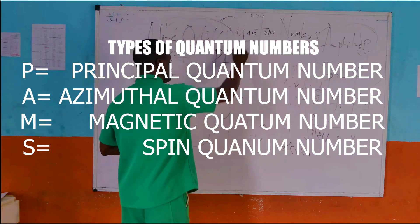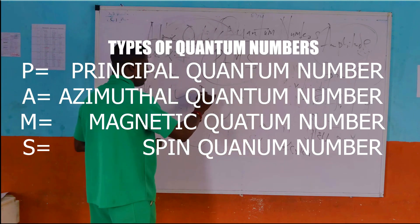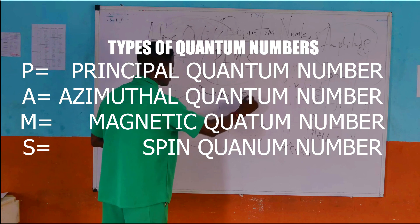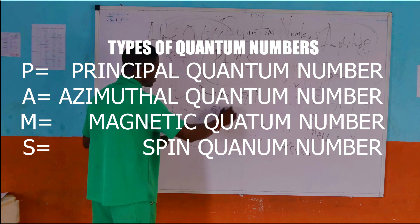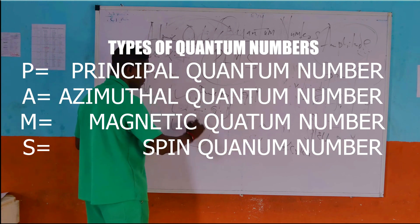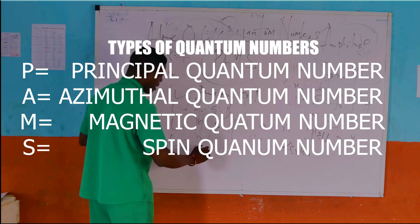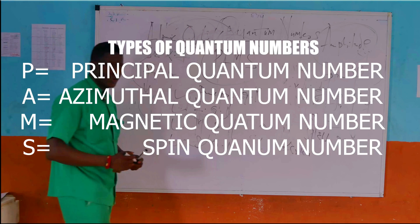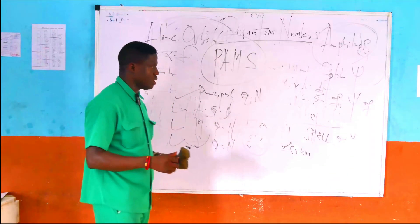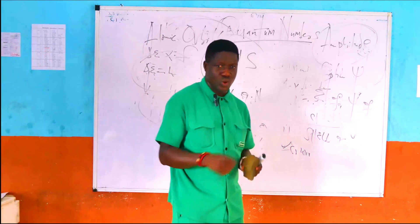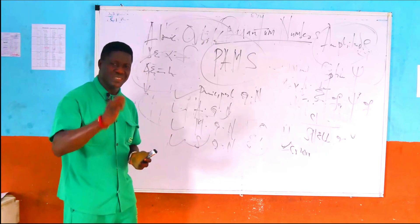The first on the list is called the principal quantum number, followed by the azimuthal quantum number. We also have the magnetic quantum number, and finally the spin quantum number. I will be considering them one after the other so that you can have a well-digested knowledge. I will be looking at them one after the other, providing you with the basic information.